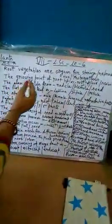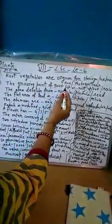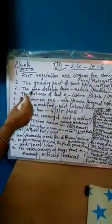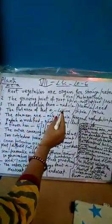The growing point of root tip is root cap, bark, or nascale. The flat area of leaf is lamina, stipule, or petiole. Leaf ka jo spreading portion hai, wo hai lamina.